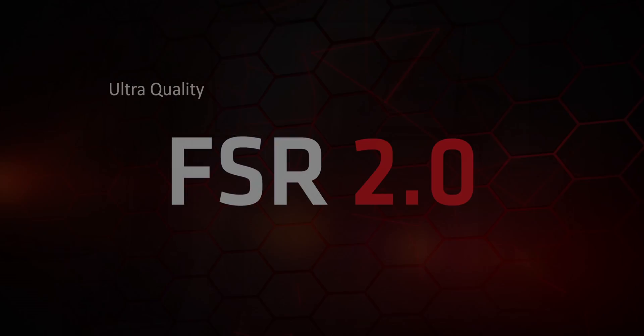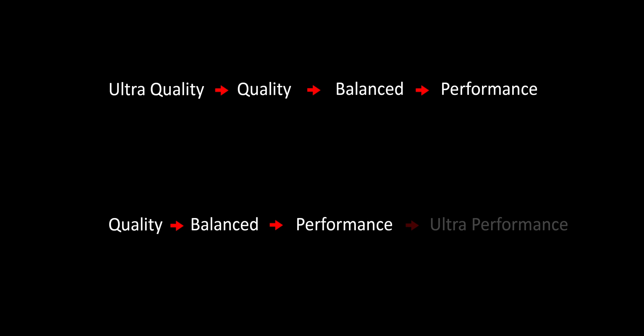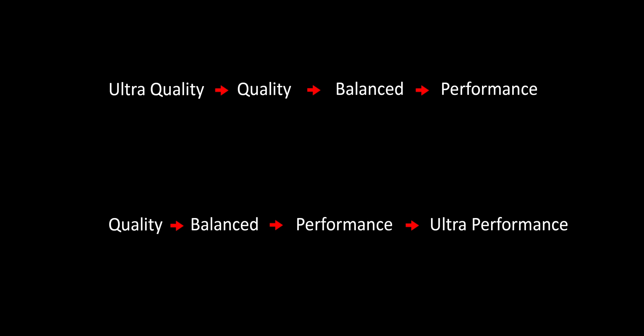Later versions changed their naming to be more similar to the way that DLSS is named, so it went from Ultra Quality, Quality, Balance, Performance to Quality, Balance, Performance, Ultra Performance — the same way that DLSS is named. In the benchmarking slides, I will be referring to both FSR Quality and Ultra Quality Mode as just Quality Mode for simplicity's sake, since they're really the same setting.